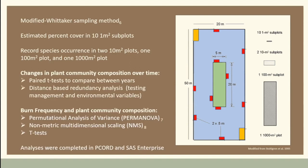For changes in plant community composition over time, we used a simple paired t-test to compare between years. For testing management and environmental variables, we used distance-based redundancy analysis. For burn frequency and plant community composition we used permutational analysis of variance and non-metric multidimensional scaling, plus t-tests. All analyses were done in PC-ORD and SAS.